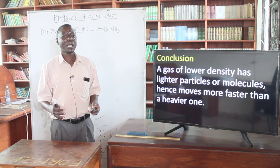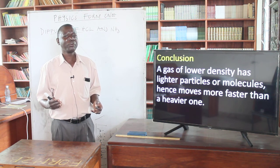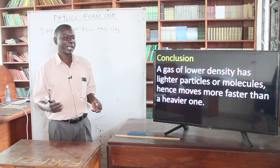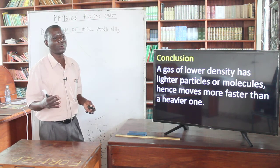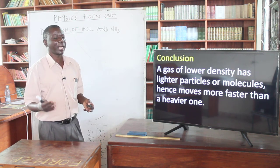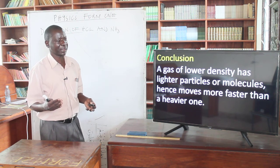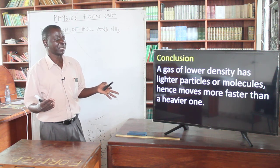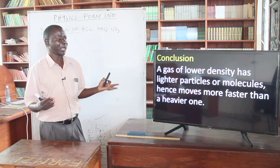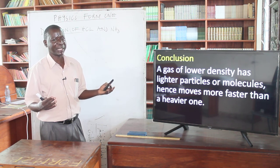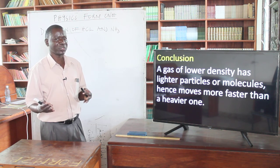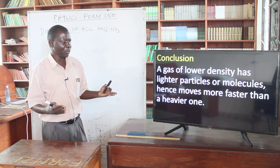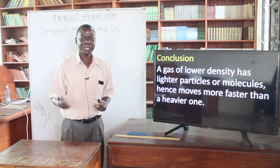In conclusion, a gas of lower density has lighter particles or molecules and therefore they move very fast. In this case, the ammonia particles are lighter and smaller, and therefore they move faster, while the hydrochloric acid particles are heavier and move at a lower rate. We will look at more on this in our next video.